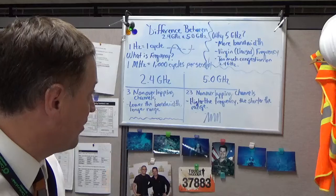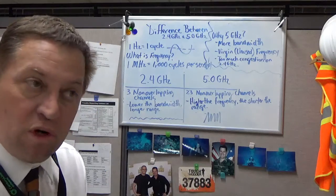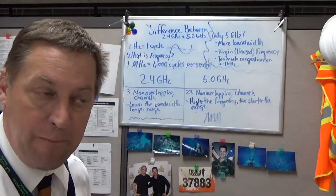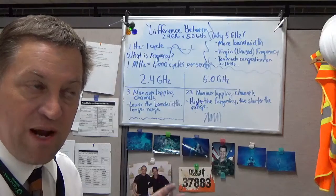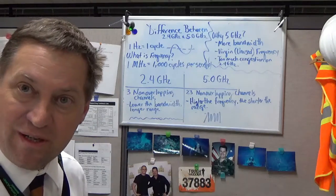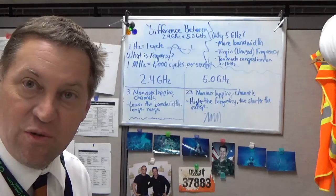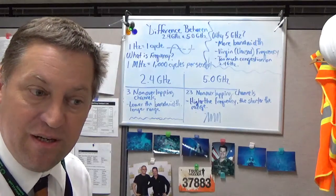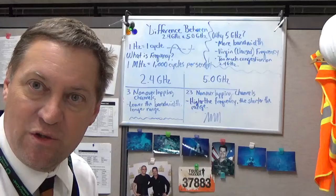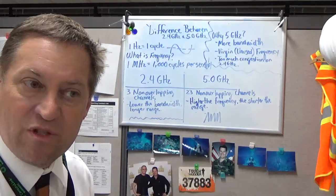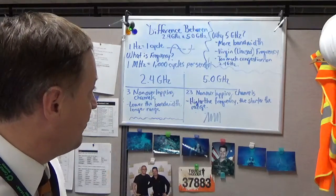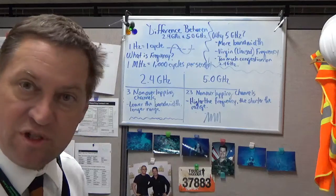The second part is a virgin or unused frequency. There just isn't any traffic on it until recently. We're starting to add more devices onto the 5 gigahertz frequency. But for the most part, it's an unused frequency. And that's why it was introduced, because 2.4 gigahertz has too much congestion on it.